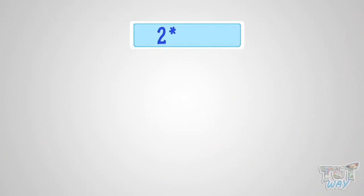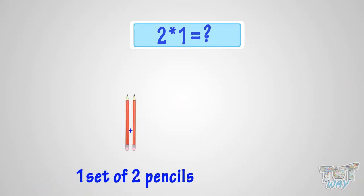What is two multiplied by one? It is the same as one set of two pencils. So it is two pencils. That is, two multiplied by one is two.